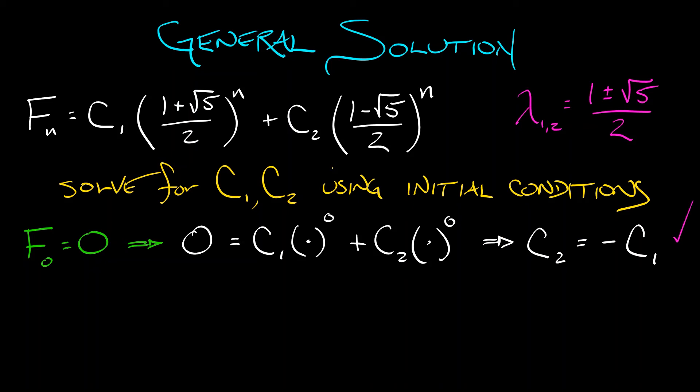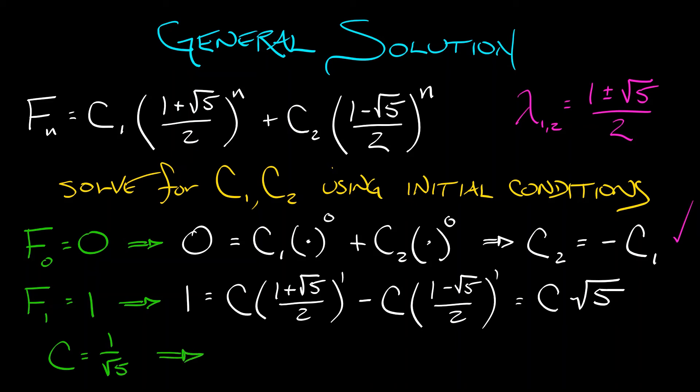That's not enough information, we need one more equation. So let's use n equals 1. F1, the first term in the sequence is 1. That means 1 equals C1, I'm just going to call it C, times lambda 1 to the first power, plus C2, that's really minus C, times lambda 2 to the first power. A little bit of algebra there, we get some cancellations. And what do I get? I get C times square root of 5. That means that this constant C is really 1 over root 5. And my general expression for the nth Fibonacci number is 1 over root 5 times quantity 1 plus root 5 over 2 to the n minus 1 over root 5 times quantity 1 minus root 5 over 2 to the n.